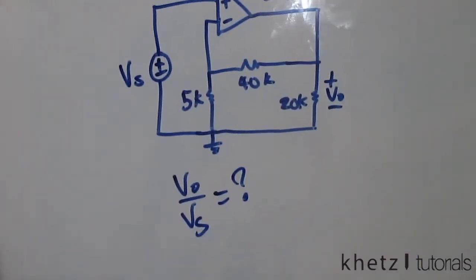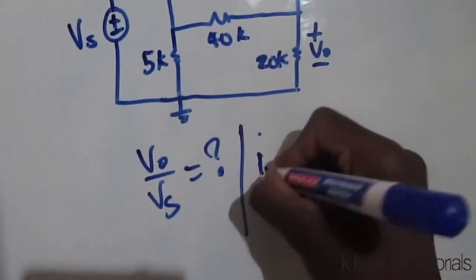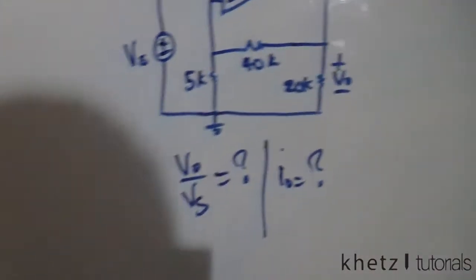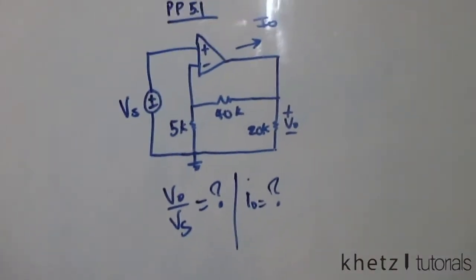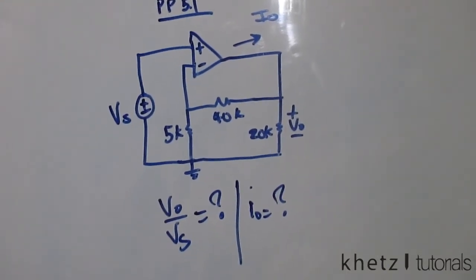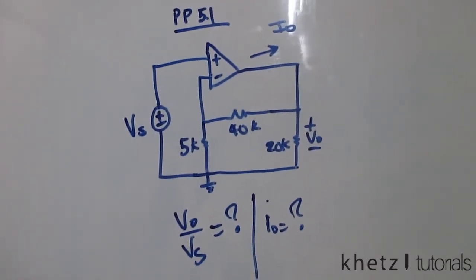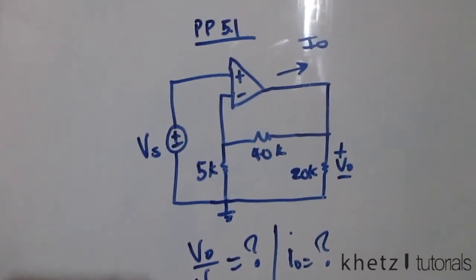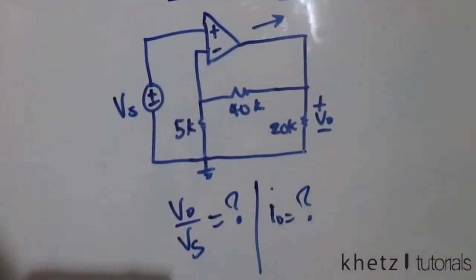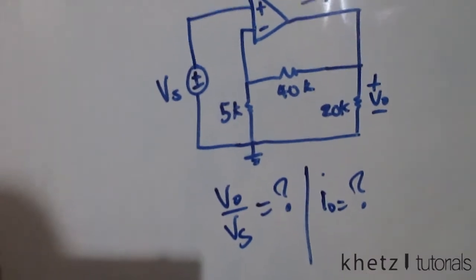Secondly, we are asked to find io. For this problem, I will not transform this op-amp circuit into its equivalent. I will simply use nodal analysis, which is quite easy compared to trying to find the equivalent circuit using dependent sources and such things.